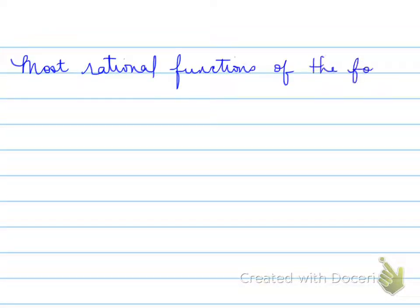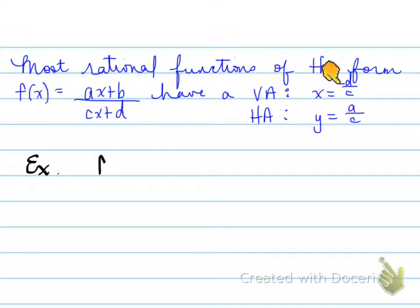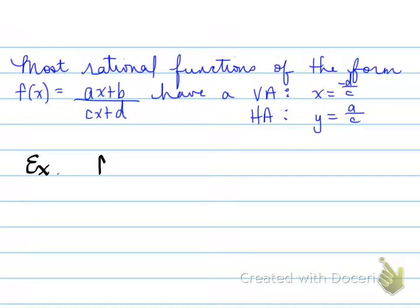Most rational functions of the form f(x) = (ax + b) / (cx + d) have a vertical asymptote at x = -d/c and a horizontal asymptote at y = a/c.